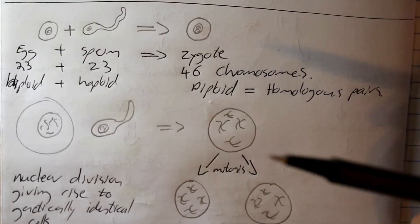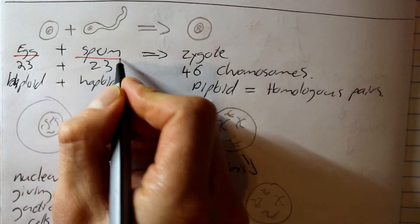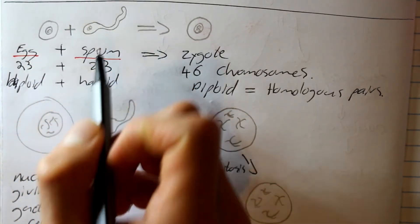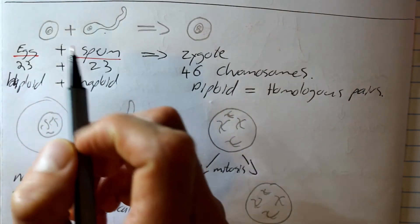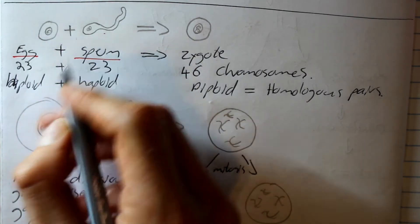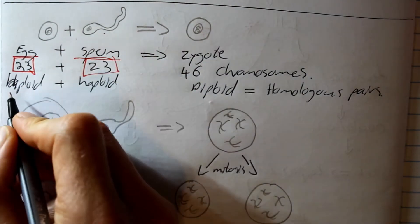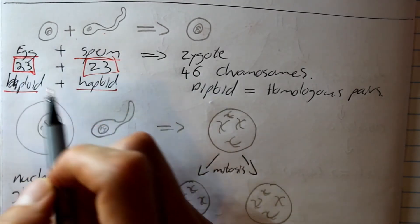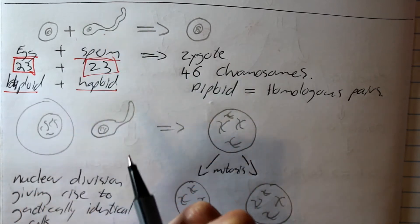Eggs and sperm are made through the process of meiosis. The parent cell divides through meiosis and halves the genetic information to produce — in males, sperm, and in females, eggs. These two cells each contain 23 chromosomes, making them haploid, meaning they've each got half the amount of genetic information of a normal cell.